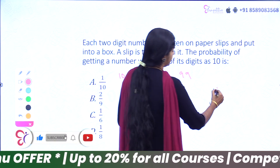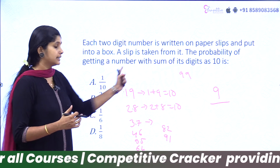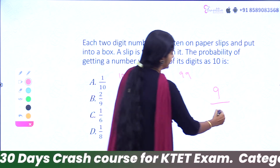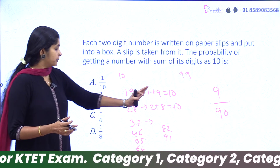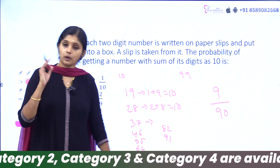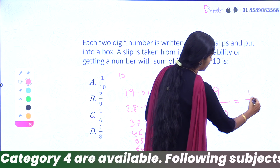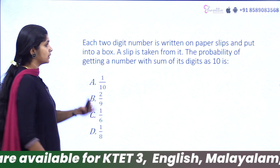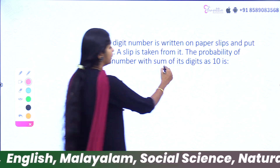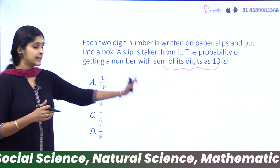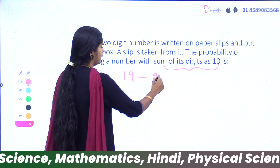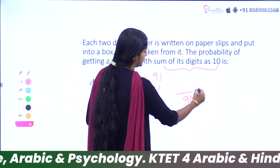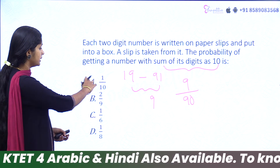There are 9 favorable numbers out of 90 total two-digit numbers. The probability is 9 by 90, which simplifies to 1 by 10. The answer is option A: 1 by 10.